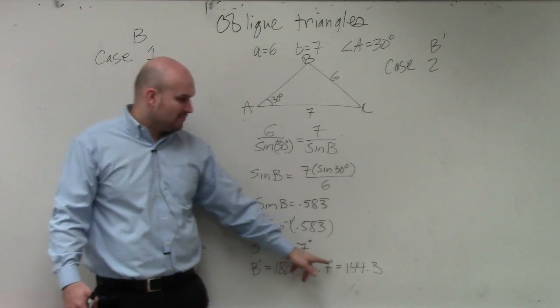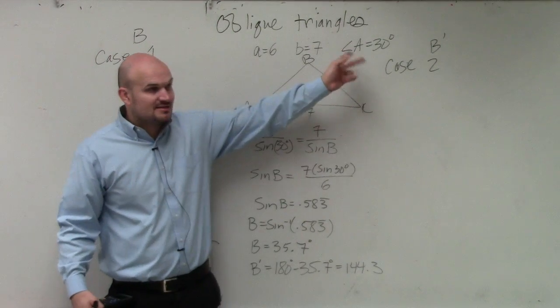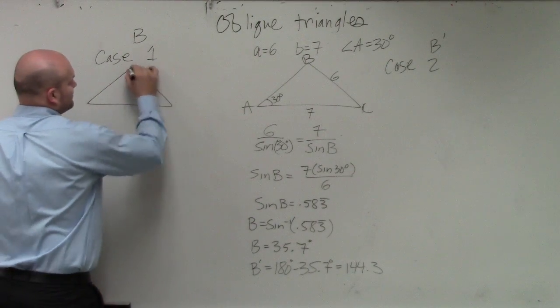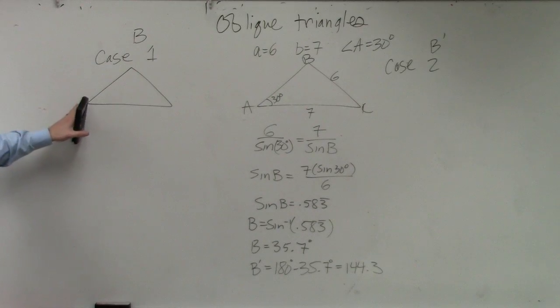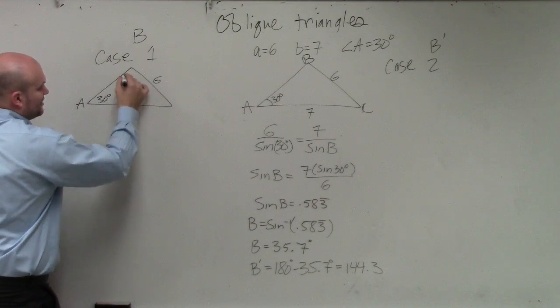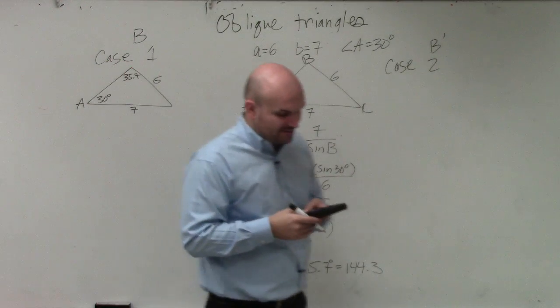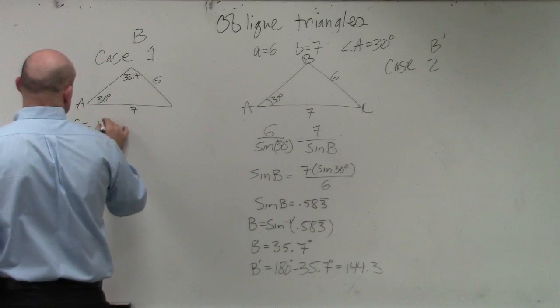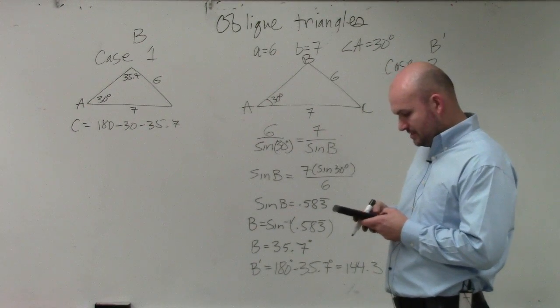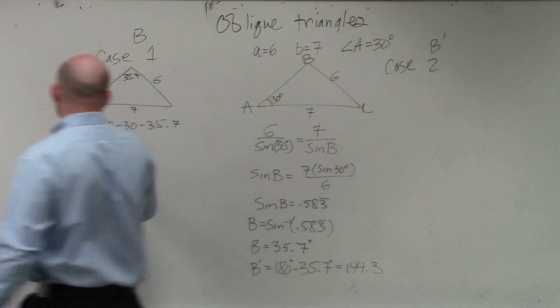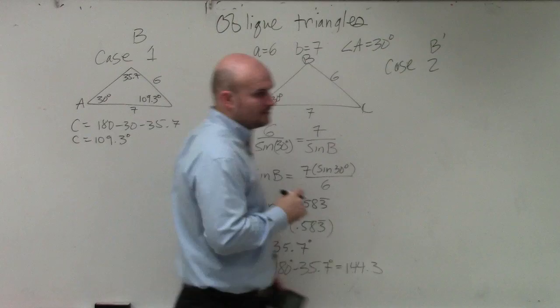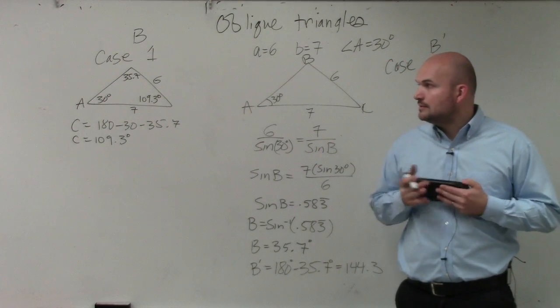So if I know B, so case one, a lot of times I like to, again, create a triangle so I could fill in. So in this case, I have A, which is 30 degrees, B is 6, B is 7, and now I'm saying B is 35.7. So if I have 30 and 35.7, can I figure out what C is? Of course I can. So C equals 180 minus 30 minus 35.7. So I do 180 minus 35 minus 30, 35.7, and I get 109.3 degrees. Does everybody see that?